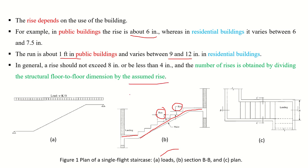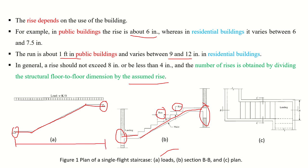The number of rises is obtained by dividing the structural floor-to-floor dimension by the assumed rise. For the loading arrangement, if the staircase is supported only at the ends of the landings, the complete staircase analysis comprises two landings and the inclined part. The span length runs from one end to the other, with a UDL applied over the entire length.